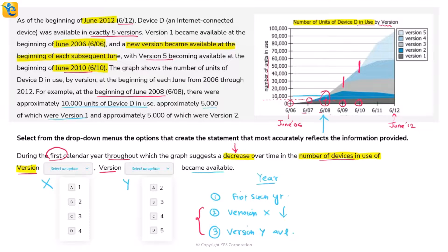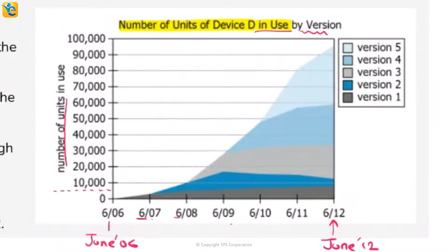Our first job is to find which version is decreasing. A decrease means it should come lower vertically on the y-axis. Version 1 (dark gray) keeps moving up. But Version 2 (dark blue) shows a dip from this point and keeps decreasing all the way to June 2012.